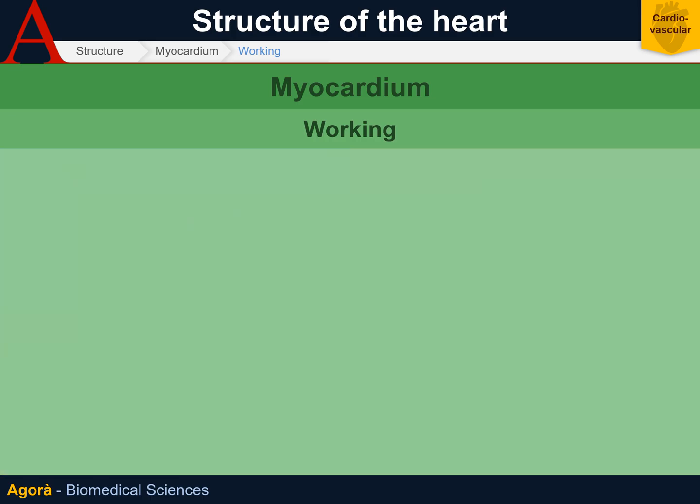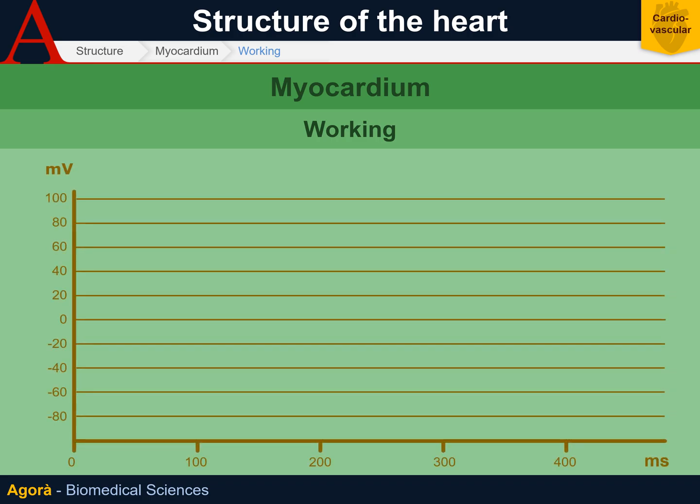The myocardiocyte is not like the striated muscle, whose action potential is very simple and lasts only about two milliseconds. Instead, it is an excitable cell with a very particular system where action potentials are very long and last for up to 200 milliseconds, thanks to particular interactions of the ion channels.